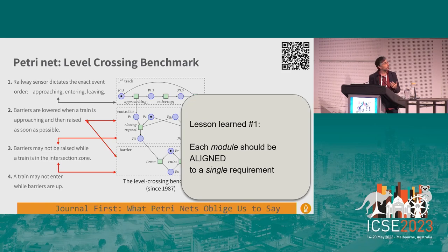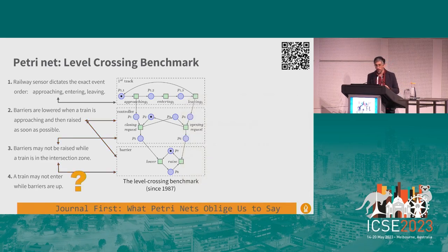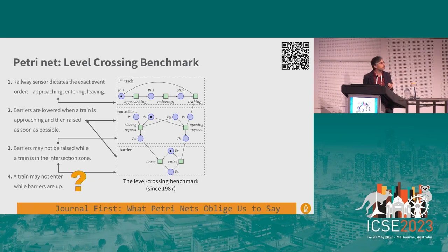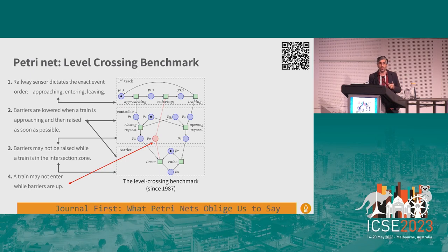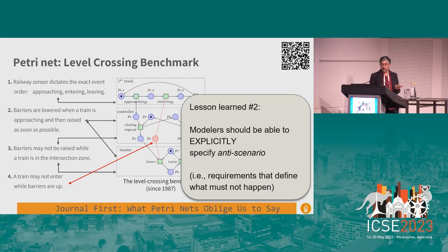One bug: after the first train passes the barriers and before the second train arrives, the barriers are raised and lowered twice for no reason. The requirements' implementation is mixed together, making it hard to identify which state and transition is responsible for which behavior. In Petri nets and any imperative language, you cannot separately implement each requirement and expect everything to work together. You must explicitly specify how to combine them, and this combination mechanism is the source of bugs. Our first lesson: languages should allow aligning each behavior or requirement to a single module. Our second lesson: languages should allow explicitly specifying what must not happen—anti-scenarios.